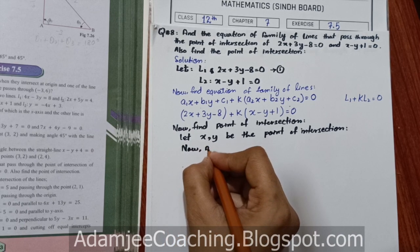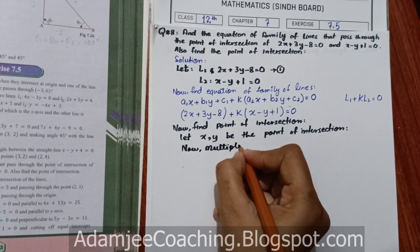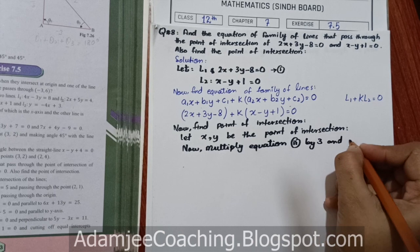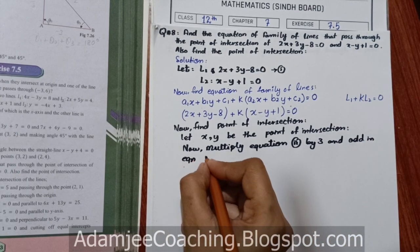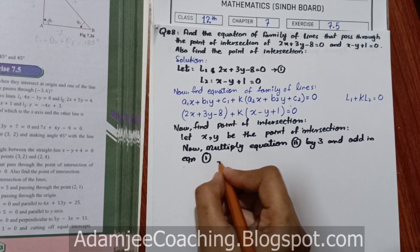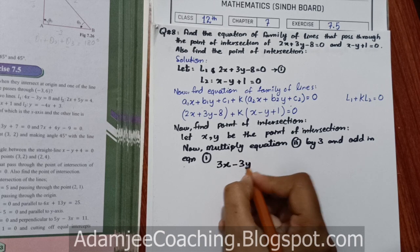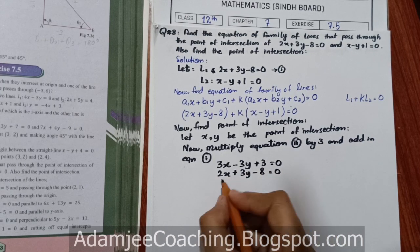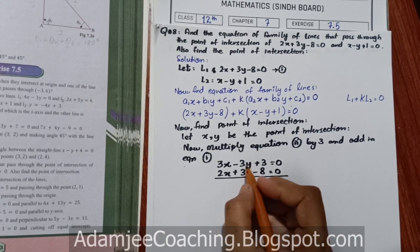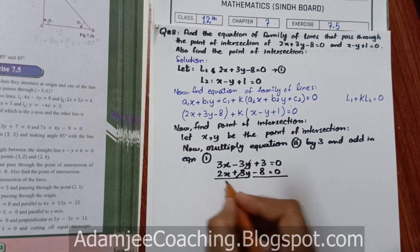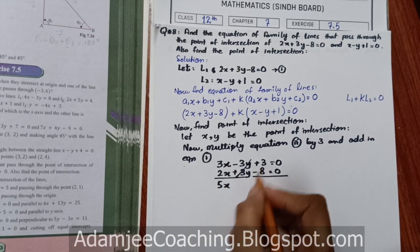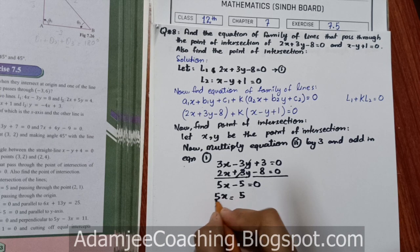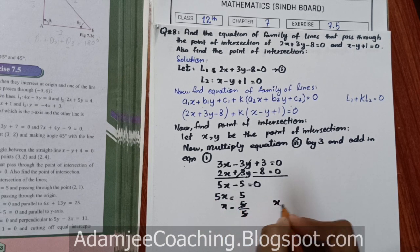Multiplying equation 2 by 3 and adding to equation 1. Equation 2 multiplied by 3 gives: 3x minus 3y plus 3 equals to 0. Equation 1 is: 2x plus 3y minus 8 equals to 0. Adding both: the 3y terms cancel. We get 5x minus 5 equals to 0, so x equals 1.